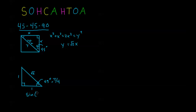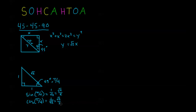Sine of π/4 equals opposite over hypotenuse: the opposite is 1 and the hypotenuse is √2, giving 1/√2. Rationalizing the denominator gives √2/2. Cosine of π/4 is adjacent over hypotenuse; since both legs are 1, that's also 1/√2 = √2/2. Tangent of π/4 is opposite over adjacent, which is 1/1 = 1. Alternatively, since sine and cosine are equal, tangent = sine/cosine = 1.